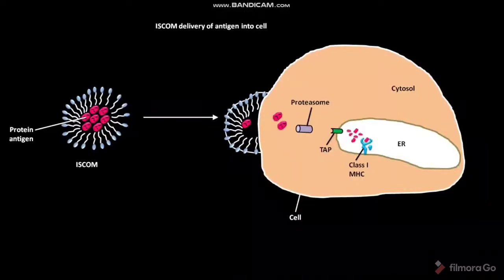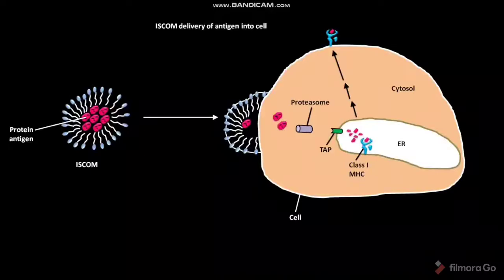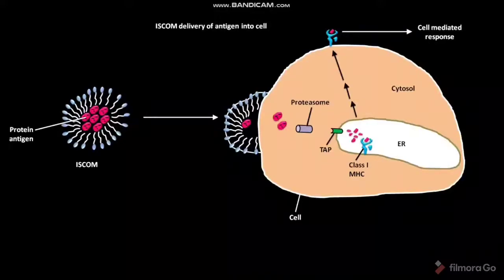The degraded protein antigen-bound class 1 MHC molecules then go through several other steps of transport and reach the plasma membrane of the cell, where they induce a cell-mediated response.